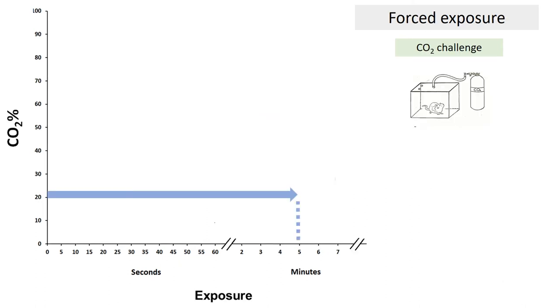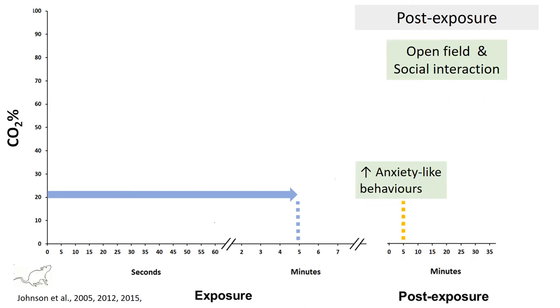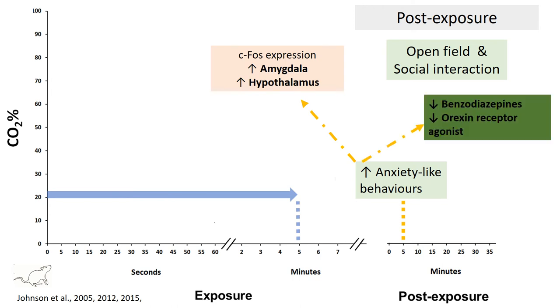Forced exposure to 20% CO2 during 5 minutes increases anxiety-like behaviors in the open field and social interaction tests. Anxiety-like behaviors due to CO2 exposure are associated with an increase in C-FOS expression in the amygdala and hypothalamus, and are decreased by benzodiazepines and orexin receptor agonists.